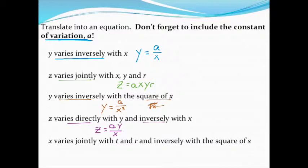And so you can kind of think of these like we did with logarithm problems. Certain things will always be in the top. In this case, directly or jointly would always be in the top. And then inversely, that part would always be in the bottom, the denominator of the fraction. Kind of like with logarithms, we always had things in the top or things in the bottom.